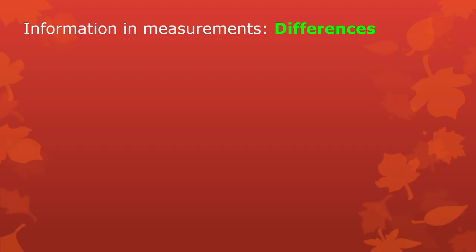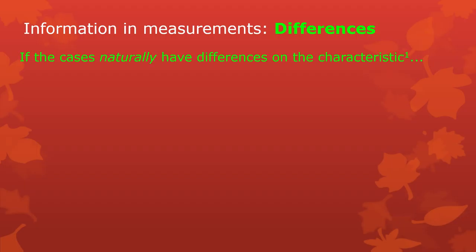The first kind of information that might be included in the symbols written down is information about differences between the observations. Each case is like each person — or if it's rocks we're observing, each rock is a case, or if it's one person every time they pick their nose, then a case is each nose picking. So if each case naturally might be different from each other case on the characteristic, there are potential differences between the cases on the characteristic you're measuring.